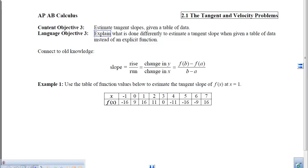This is section 2.1, the tangent and velocity problems, content objective 3, which is to estimate tangent slopes when you're given a table of data. When we're done, I'd like you to be able to explain what's done differently when you have data as opposed to an explicit function.